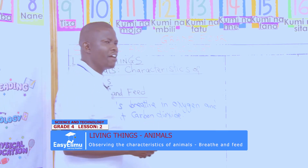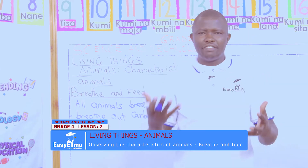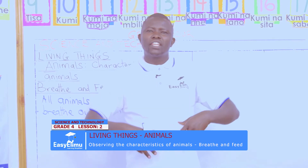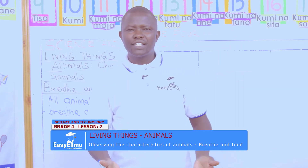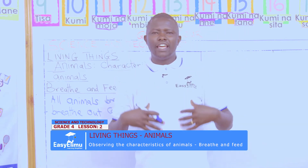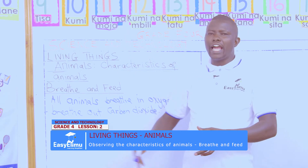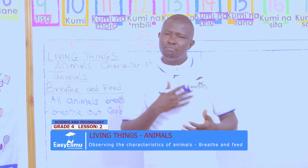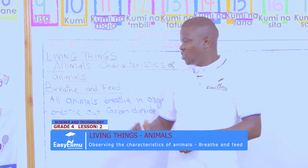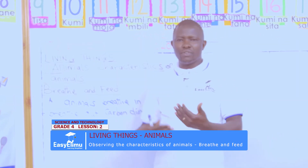For every animal to move or to survive, it has to breathe in and to breathe out. We are breathing out the unwanted gas from our body, and we are taking in the air that is needed — that is oxygen. It helps us in making food and other processes in our bodies. So all animals breathe in and they breathe out.